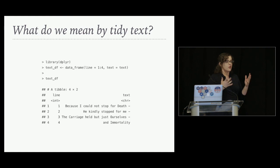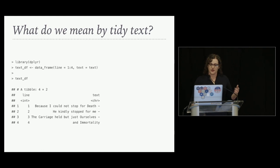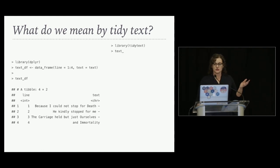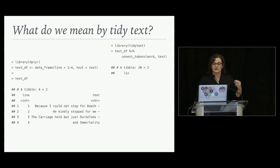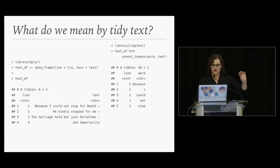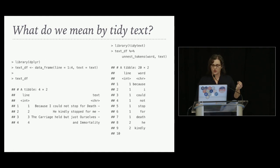This is not yet what we'd define as a tidy data structure for text, because we need to think about what is the observational unit. Most often when it comes to text, the observational unit we're interested in is single words. So let's load the tidy text package and use the unnest_tokens function to transform this data frame into a tidied data frame — one word per row. Before, we were reading the poem across; after unnest_tokens, we read it down.